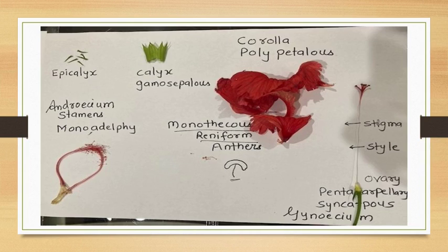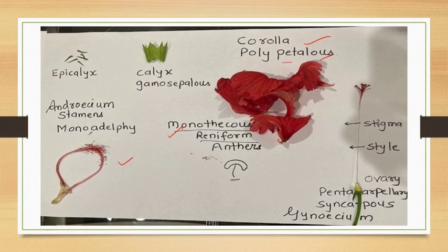You have to arrange the floral whorls in this pattern. You have to show epicalyx, calyx gamosepalous condition, corolla polypetalous condition, androecium stamens showing monoadelphous condition. This is actually a single staminal tube — while cutting or dissecting it, it got separated. Monothecous reniform anther — it has a single lobe, so monothecous reniform kidney shape. You can see in the picture the kidney-shaped anther and pentacarpellary syncarpous gynoecium.